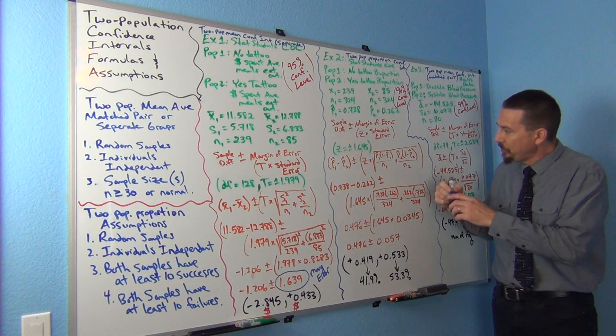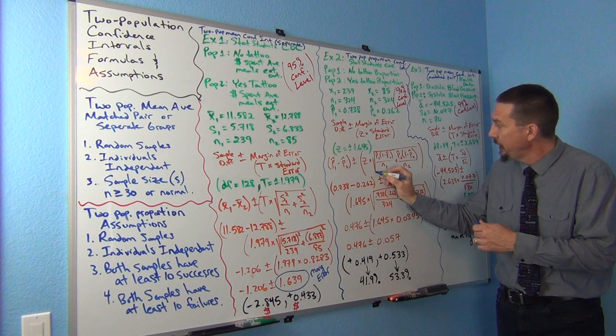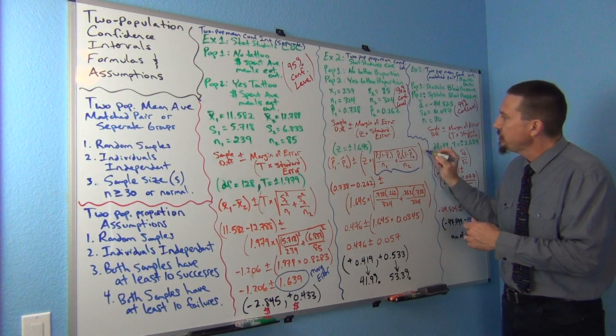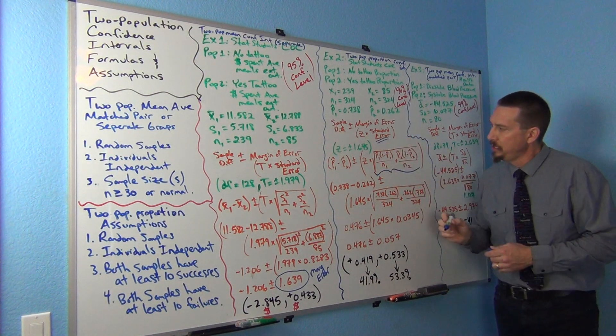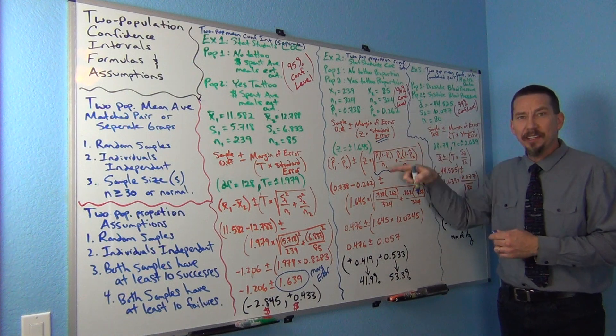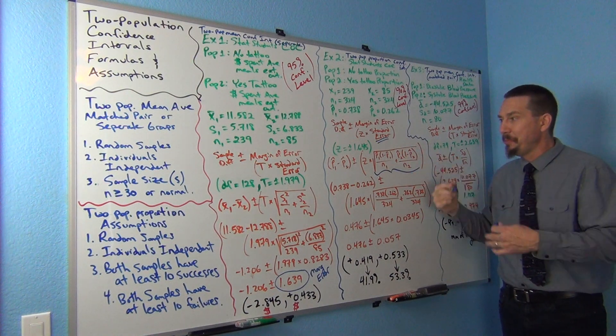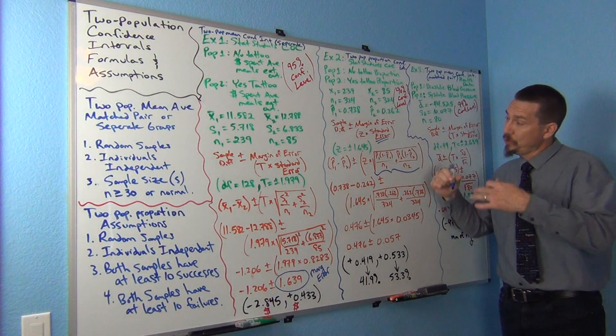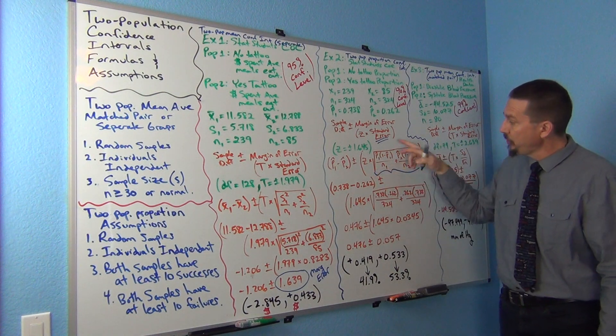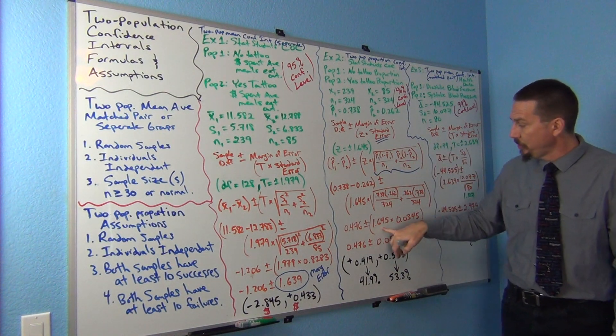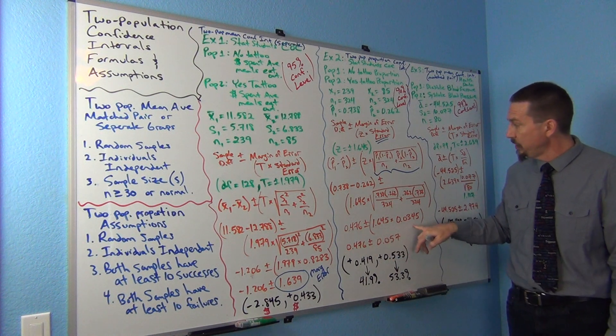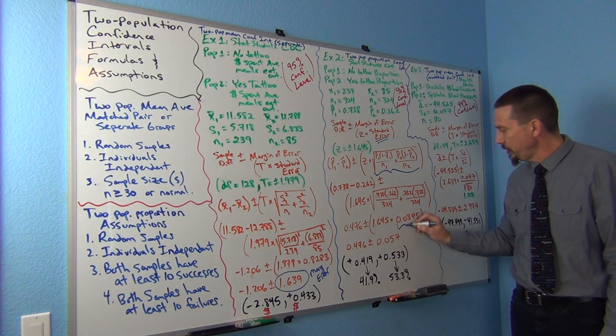Again, this part of the formula right here, this big square root thing, that actually is the standard error. So this big thing is just the standard error for the two populations, or for the two samples combined. Again, we're going to figure that out and multiply it by the critical value. Here's the standard error, 0.0345.